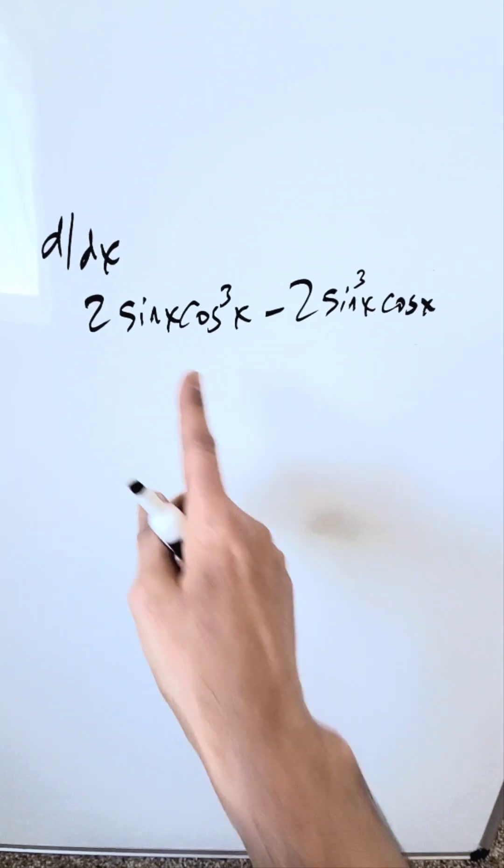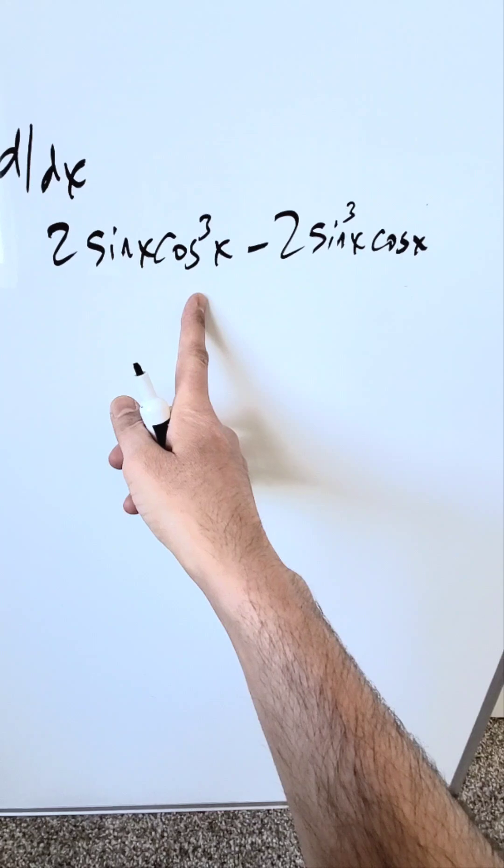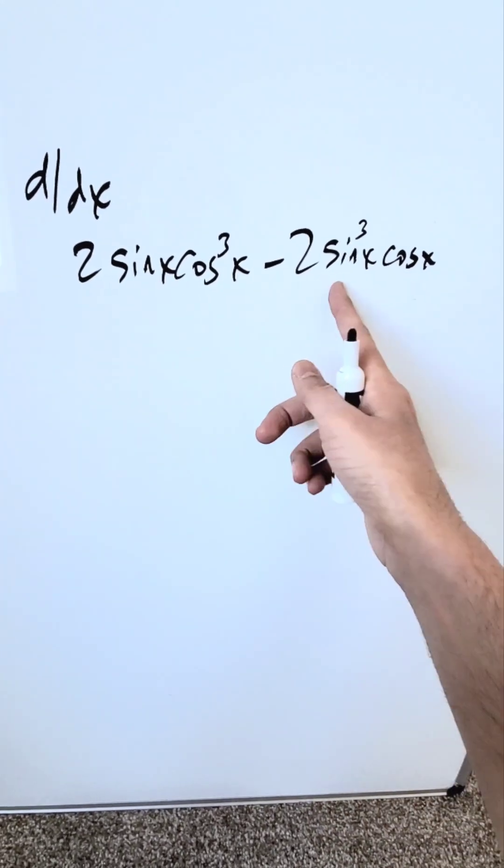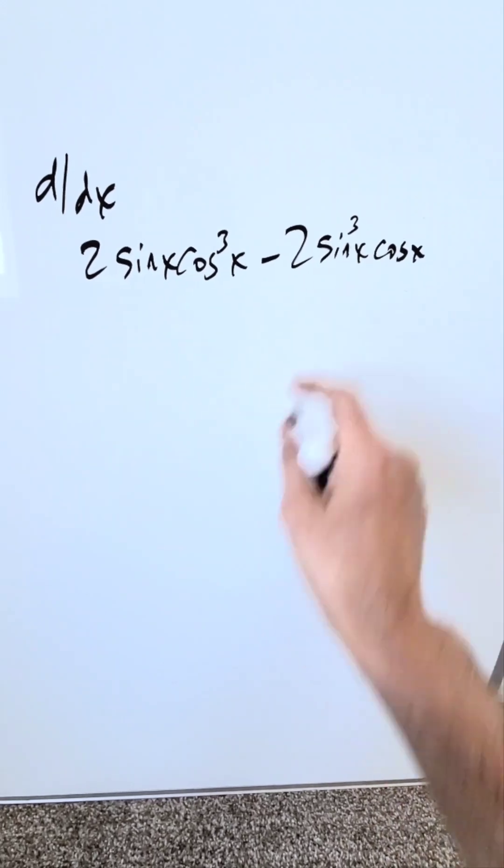We have this expression here before us. We need to do the derivative of this. The expression is 2sin(x)cos³(x) - 2sin³(x)cos(x). Look how the cube interrelates. It's here on the cosine, it's here on the sine.